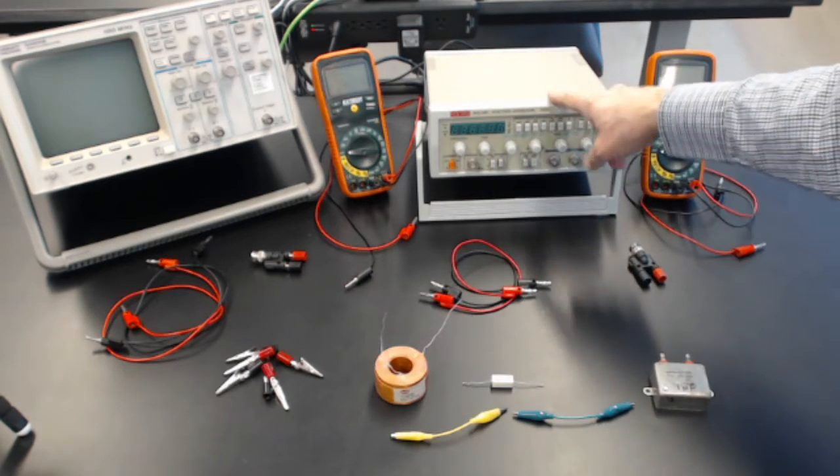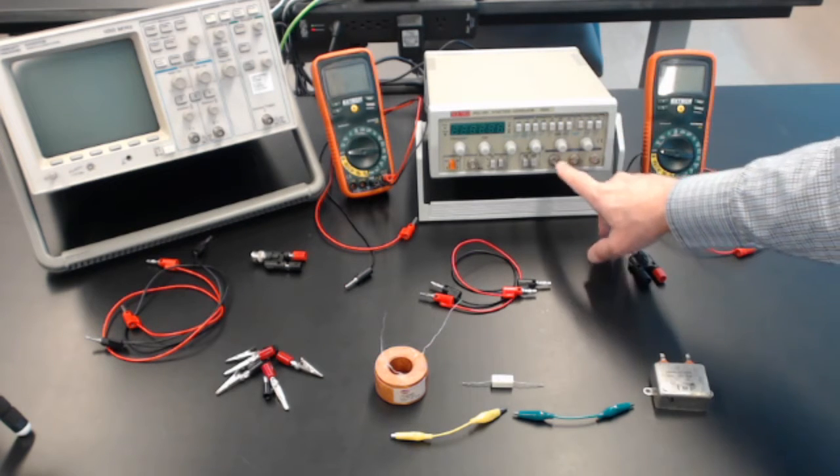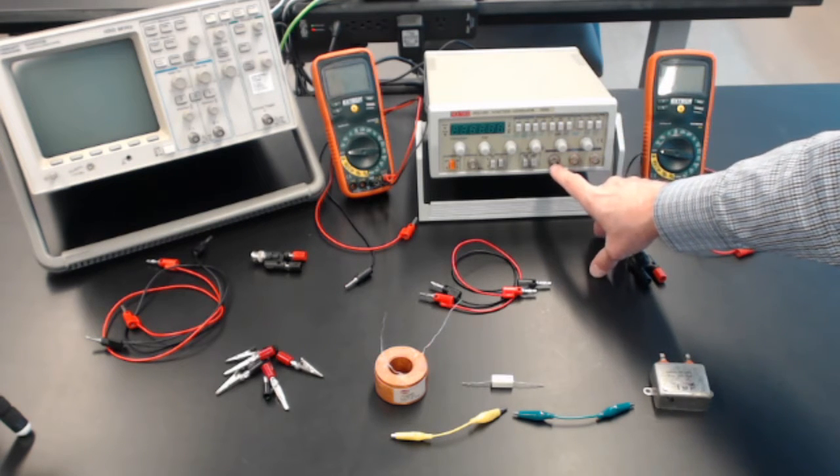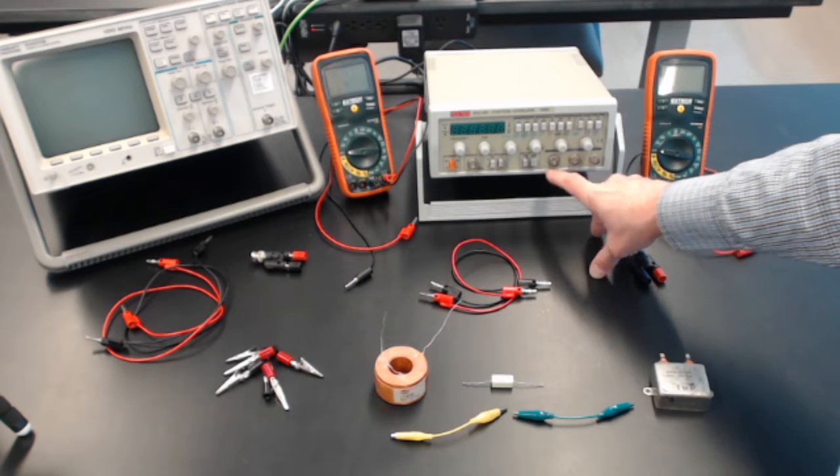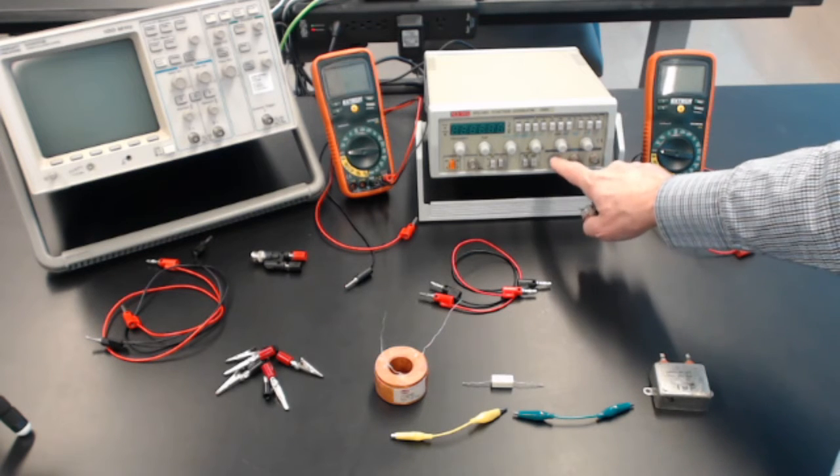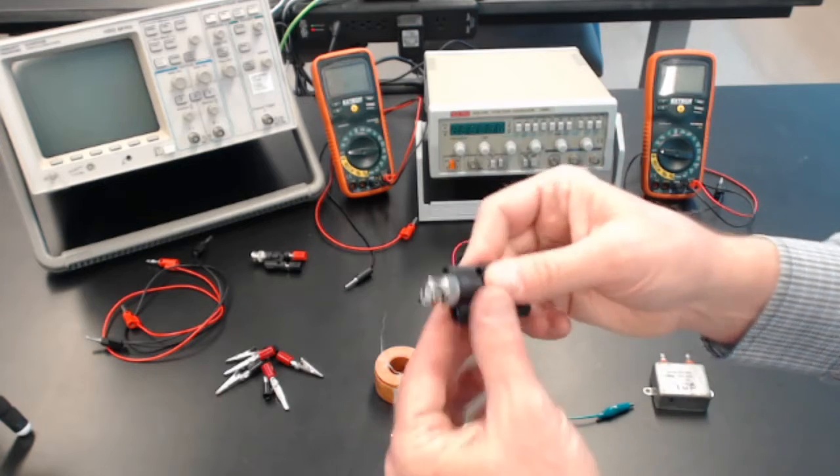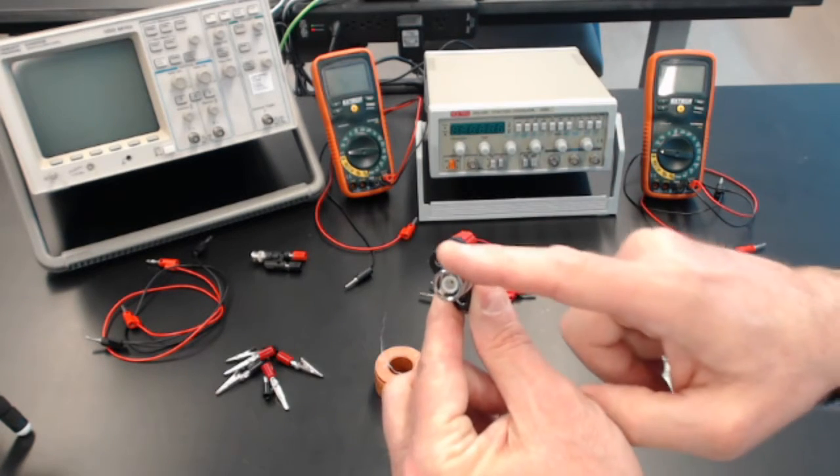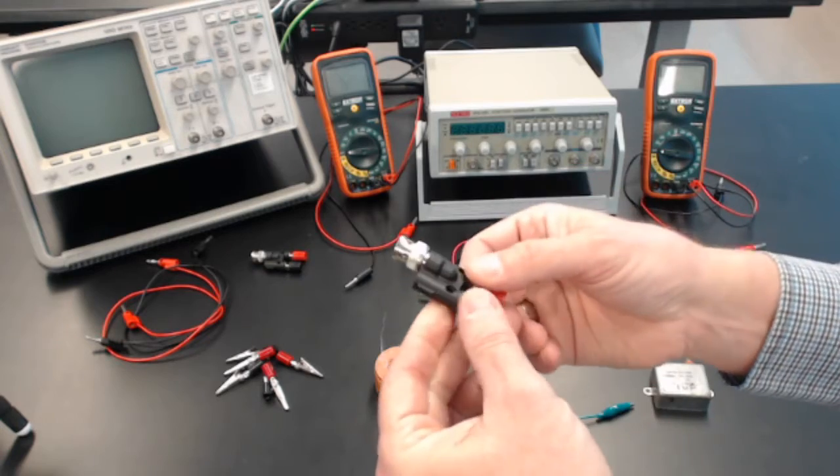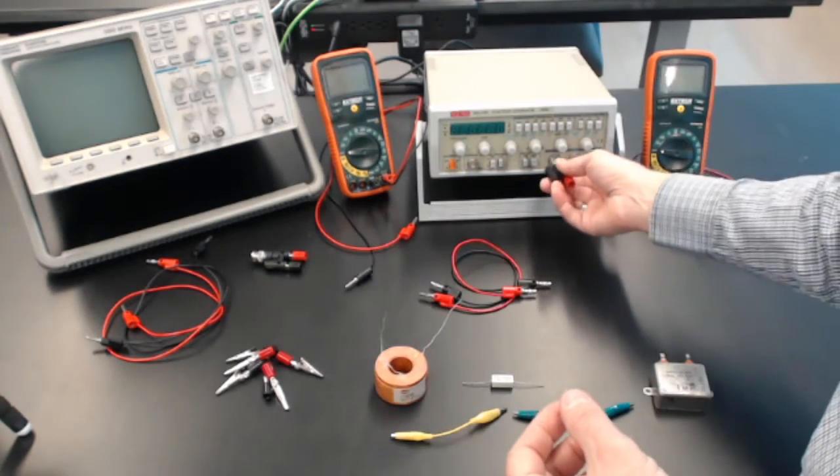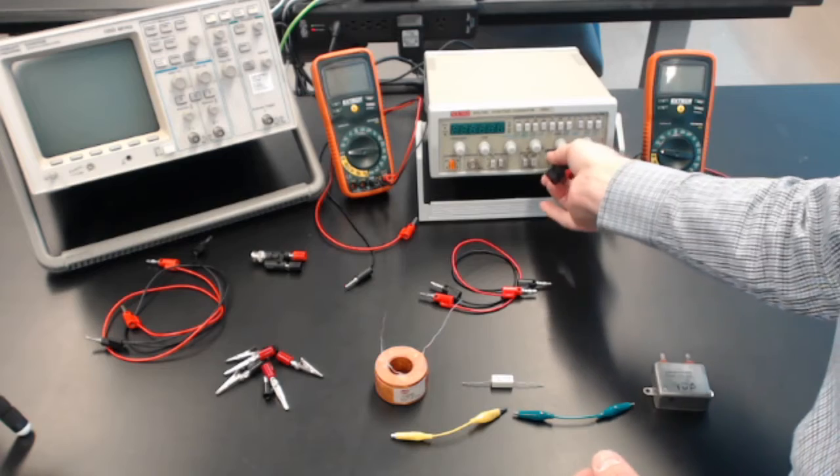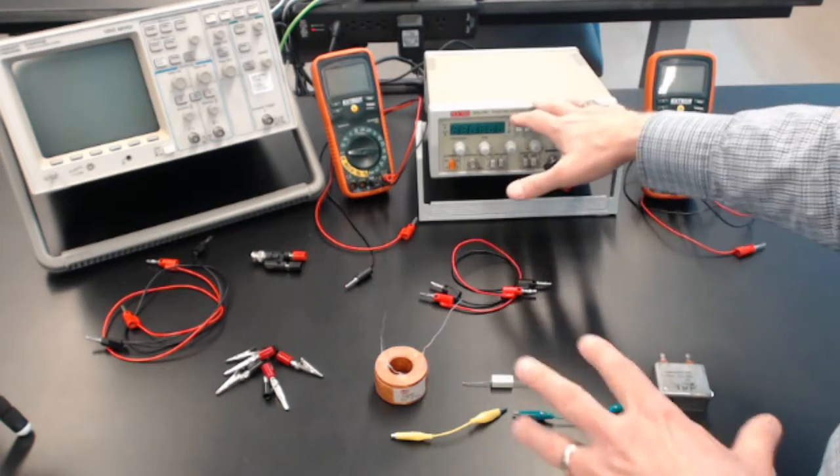To get the signal out of the function generator, we need an adapter. The connector here is for what's called a coaxial connector or BNC. It's like a cable TV connector. And so we need this little adapter that connects to the coax on one end and presents us with banana plug, where we can plug banana plugs. So we'll put that there. Okay, so that's the primary circuit.